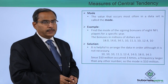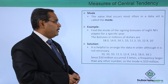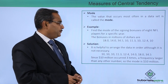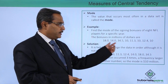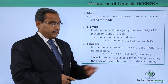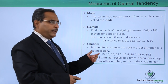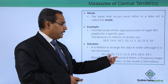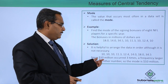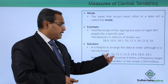Now we are going to calculate the mode. The value that occurs most often in a data set is called the mode. Find the mode of the signing bonuses of 8 NFL players for a specific year; the bonuses in millions of dollars are given. Arranging the data in order — though it is not necessary for mode calculation — we find that 10 million occurred 3 times, a frequency larger than any other number. So the mode is $10 million in this particular case.